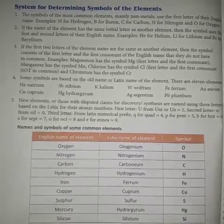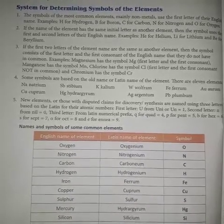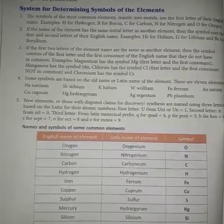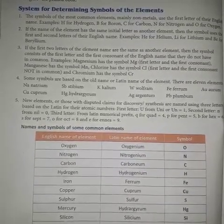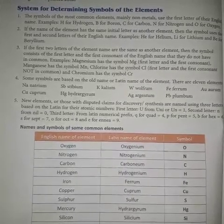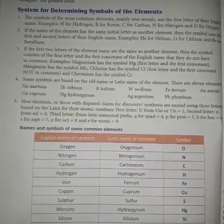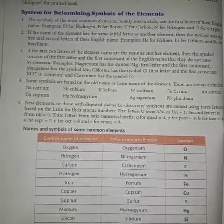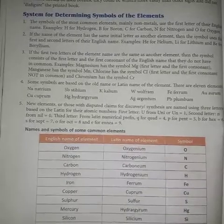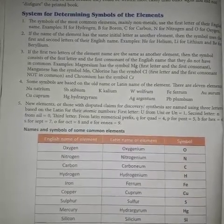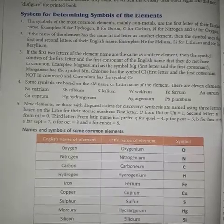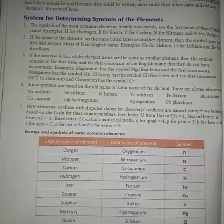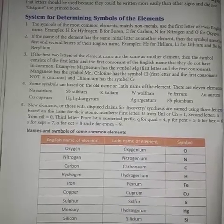If the first two letters of the element's name are the same as another element, then the symbol consists of the first letter and the first consonant of the English name that they do not have in common. For example, magnesium has the symbol Mg, manganese has the symbol Mn, chlorine has the symbol Cl, and chromium has the symbol Cr.